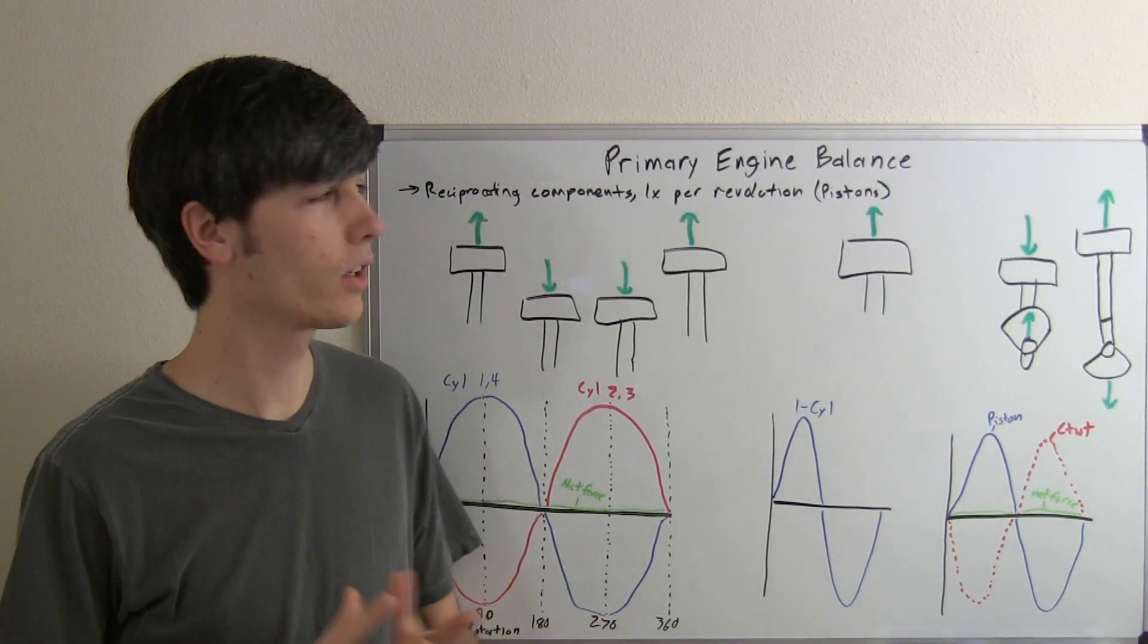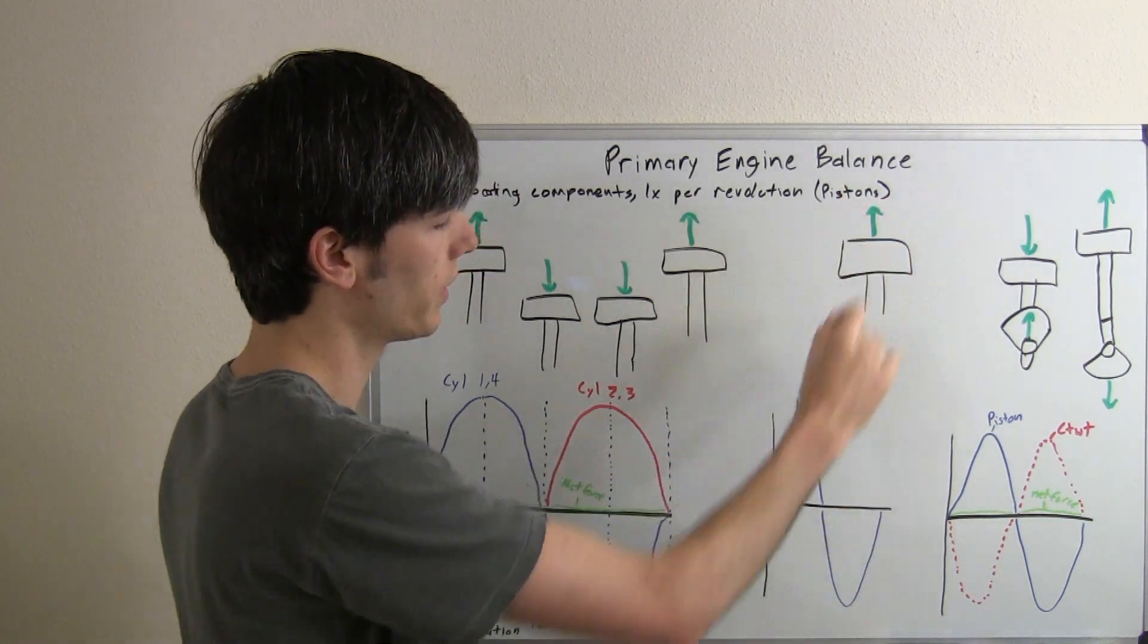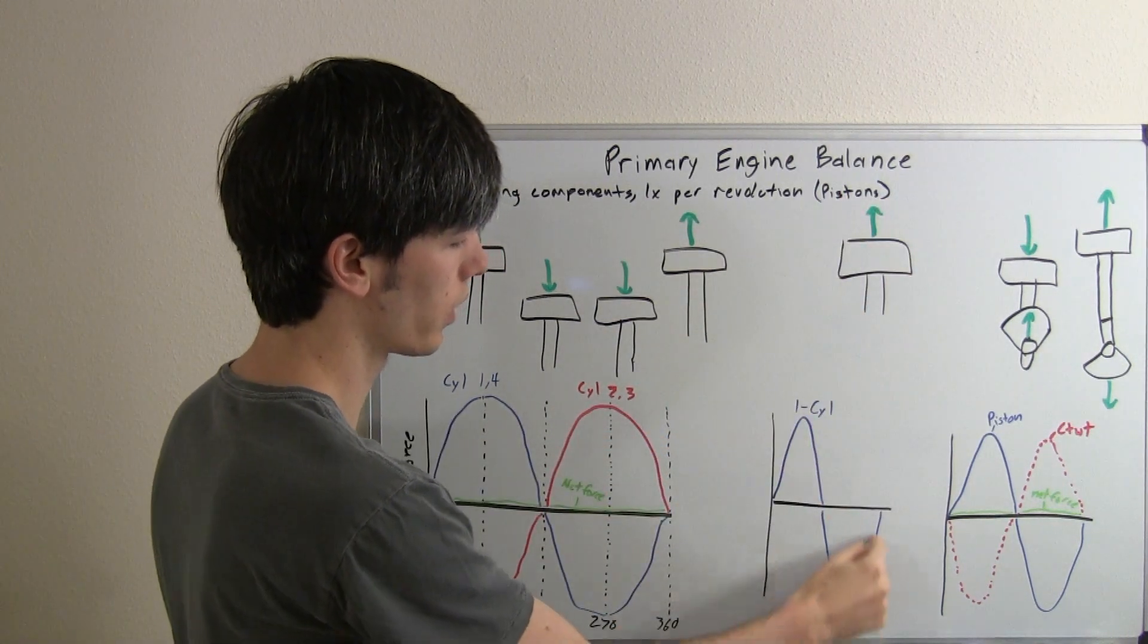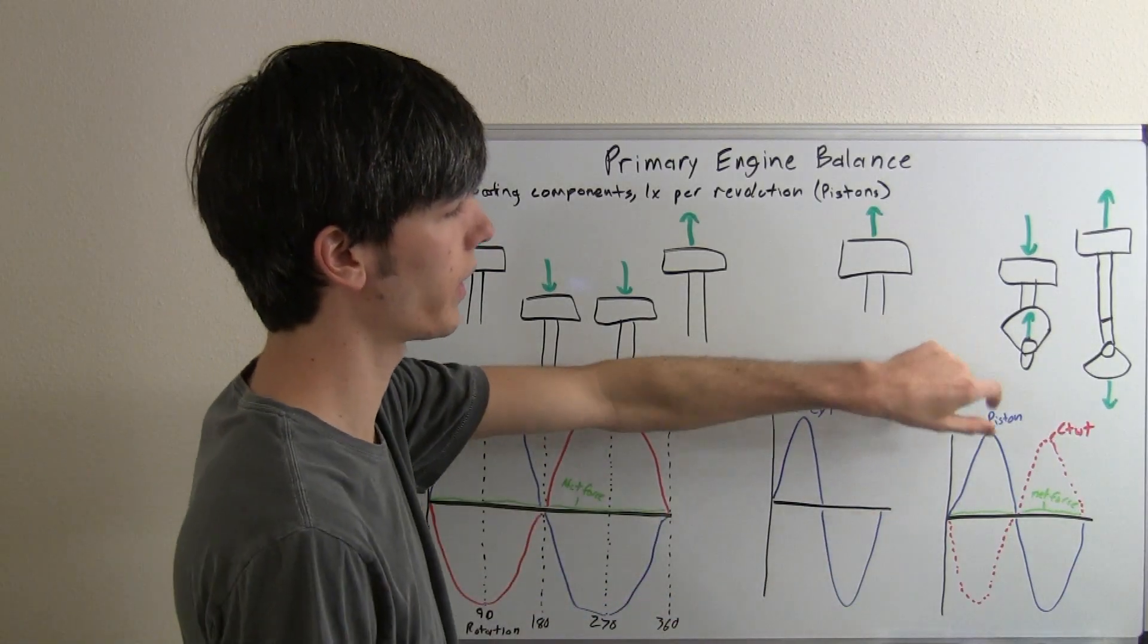Now, what if you have just a single cylinder engine? A single cylinder engine is going to have that one piston moving up and down, and so that force is going to be going up and down and there's nothing really to counteract that. That's why you're going to use a counterweight on the crankshaft.